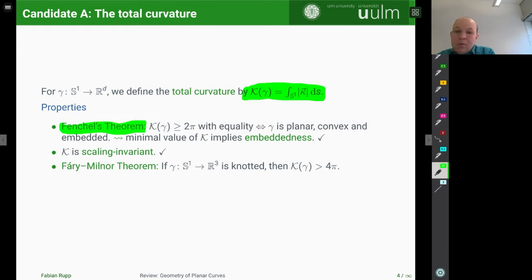And the first one being Fenchel's theorem, which says that this total curvature κ is always greater than or equal to 2π. And in the equality case, we have that gamma is a planar curve, it's convex, and it's also embedded. So the minimal shape, the optimal shape of a curve with respect to the energy κ is an embedded one. And this is kind of good because this is similar to what we had for the Willmore energy, where the optimal shape was a round sphere.